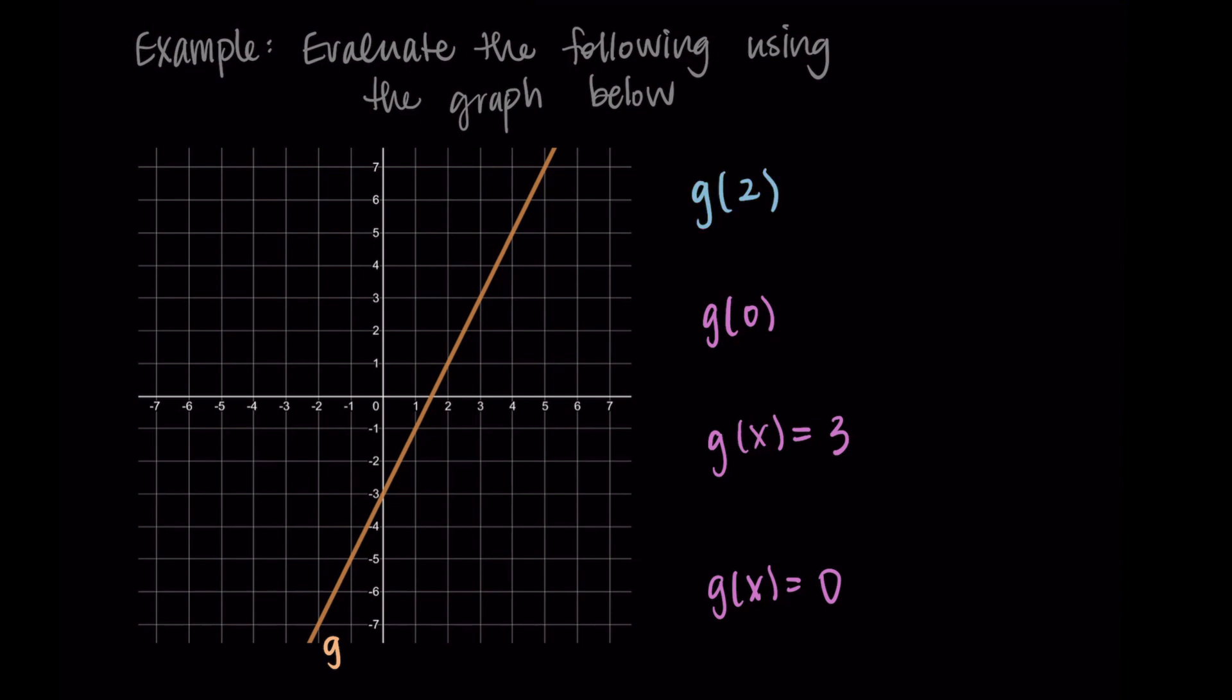Starting with g(2), I'm looking at 2 on the x, and I want to find the corresponding output. 2 as an input corresponds to 1 as an output, so 1 is my answer. Now I have 0 as my input. I'm noticing that -3 is the corresponding output.